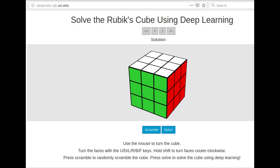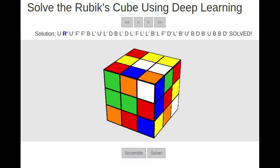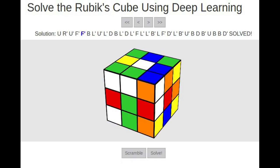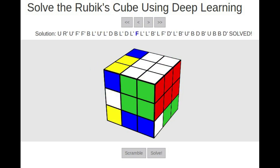DeepCubeA, a deep reinforcement learning algorithm programmed by UCI computer scientists and mathematicians, can find the solution for the Rubik's Cube in a fraction of a second, without any specific domain knowledge or in-game coaching from humans.